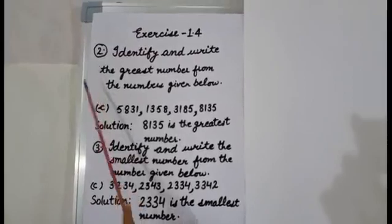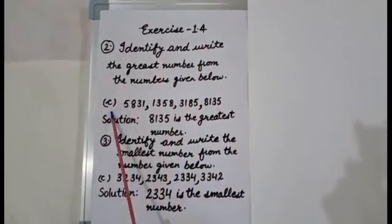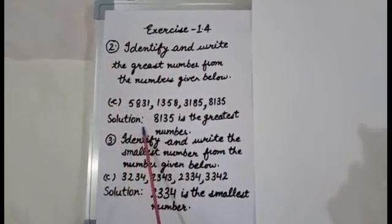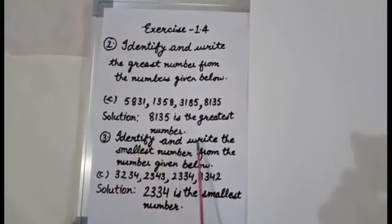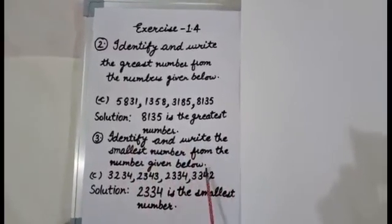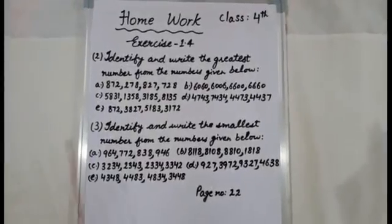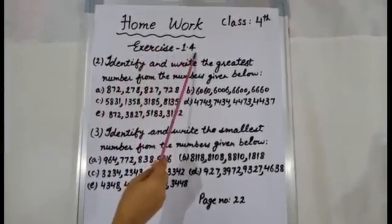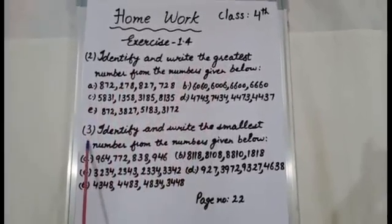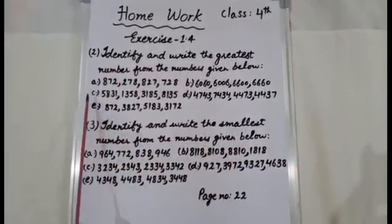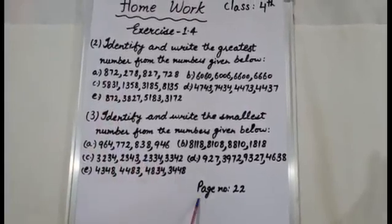Dear students, do these two sums in your notebook. Exercise 1.4, I have done part C of the second sum for you — the solution for the greatest number is shown. For the third sum, you have to identify the smallest number from the given numbers, written in the same way. This is your homework: Exercise 1.4, second sum and third sum. In the second sum, find the greatest number; in the third sum, find the smallest number. I have done part C of both sums for you — do the remaining parts by yourself on page number 22.